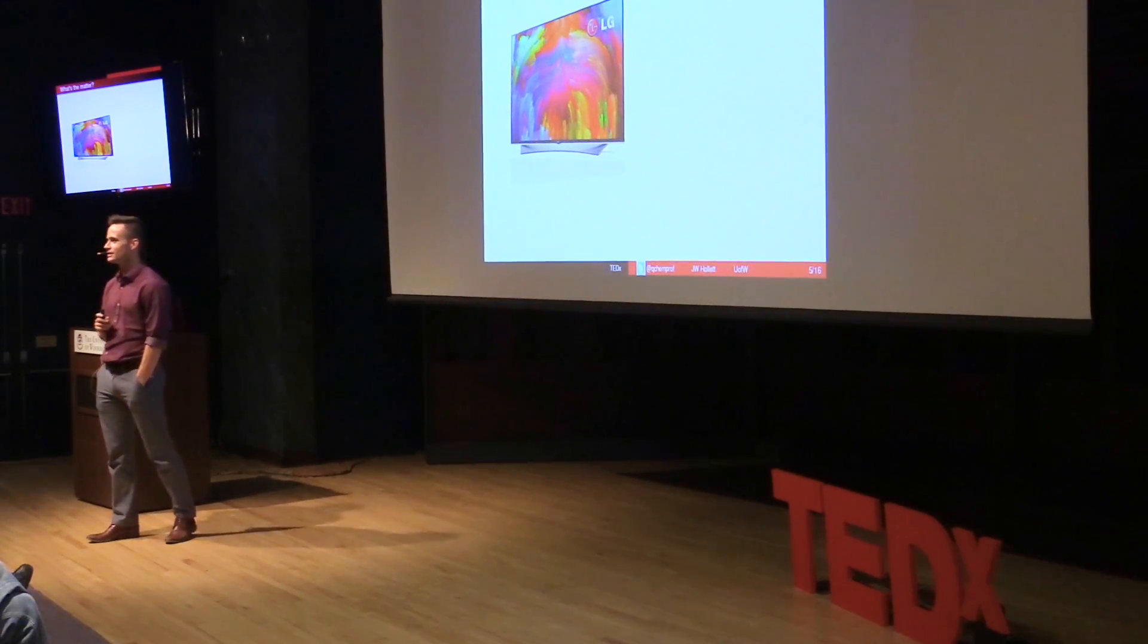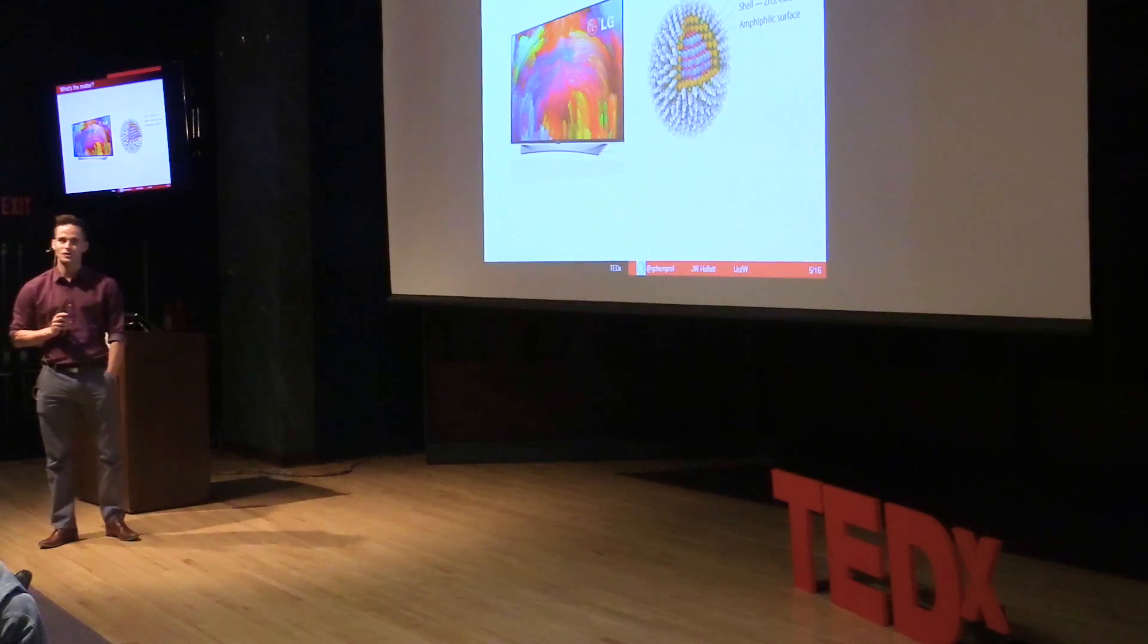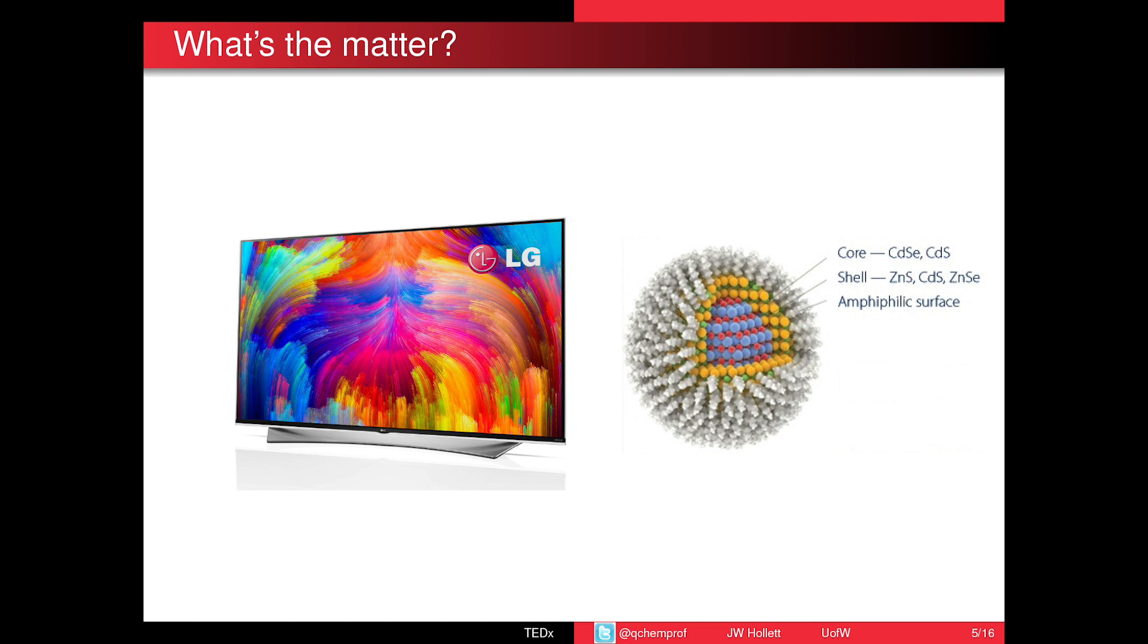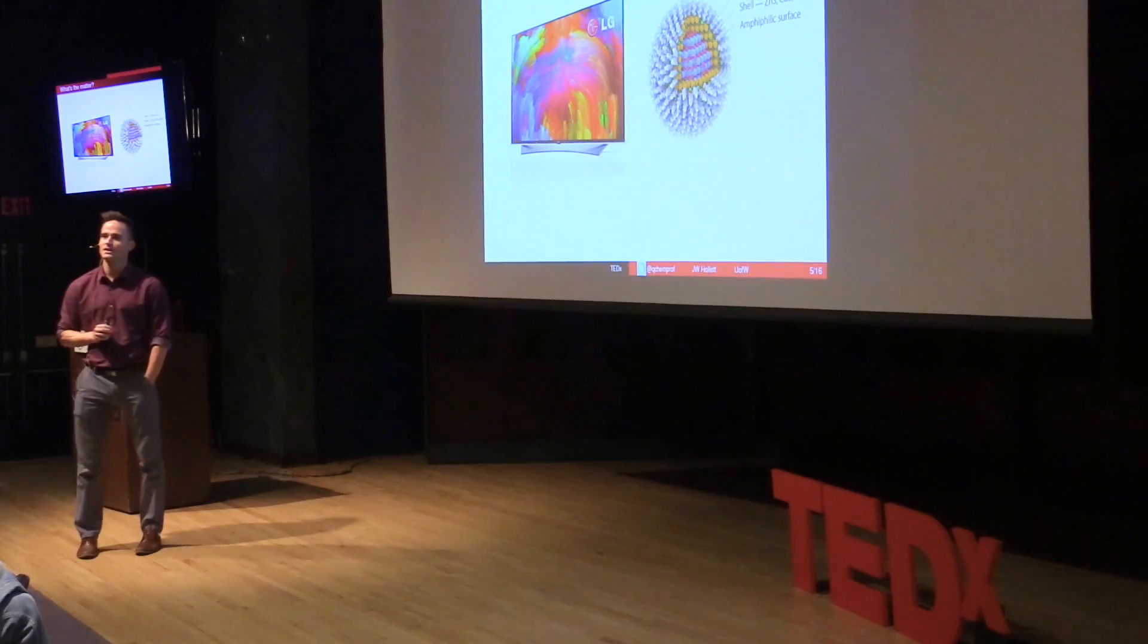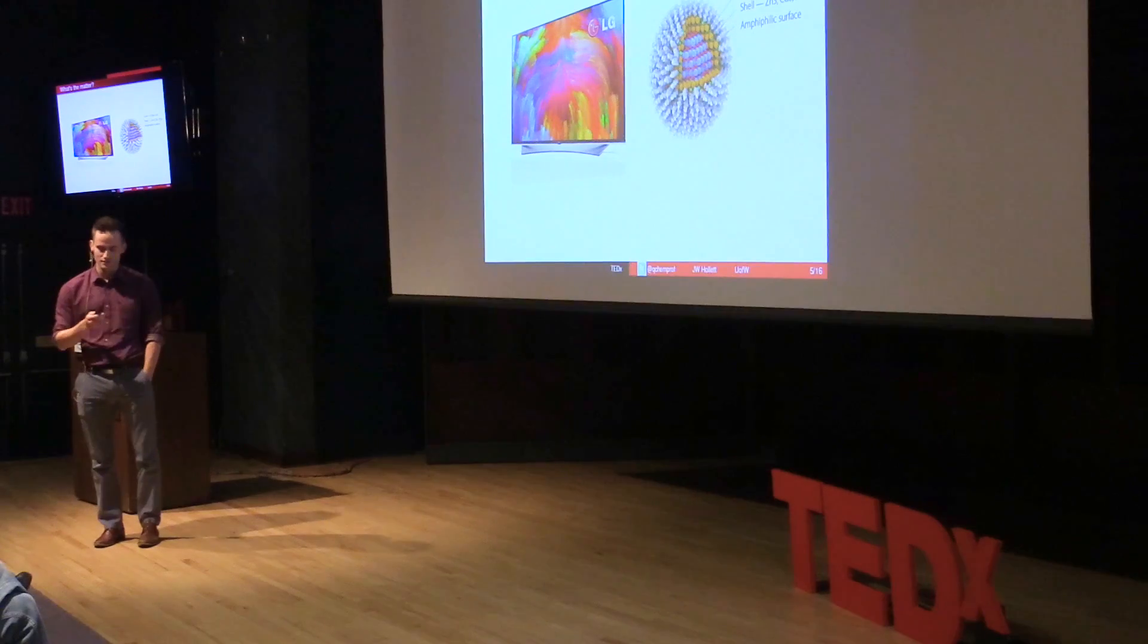And so on a quantum TV, there's exactly that, quantum dots. And so a quantum dot is a cluster of metal and non-metal atoms surrounded by some other different atoms and molecules, and it makes a little tiny semiconductor. And these make the picture on the TV better.